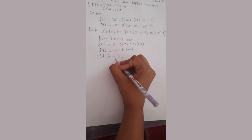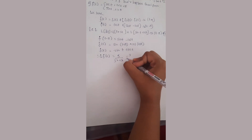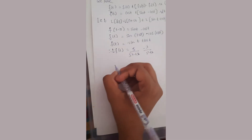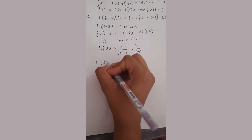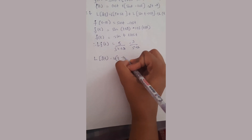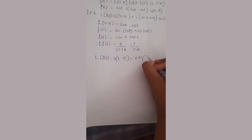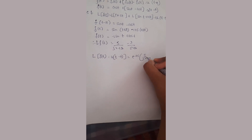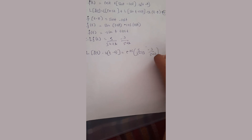The Laplace of f of t equals s divided by (s squared plus 1) minus 1 divided by (s squared plus 1) minus 1 divided by (s squared plus 1). Using the shift theorem, Laplace of f(t)·u(t minus a) equals e raised to minus pi s times s divided by (s squared plus 1), minus (s squared plus 1).